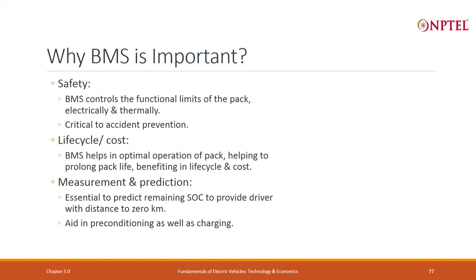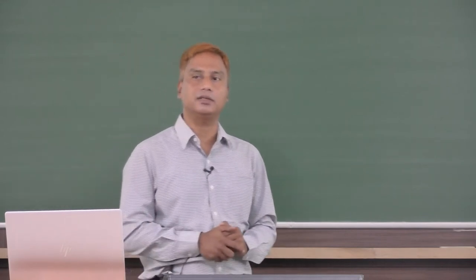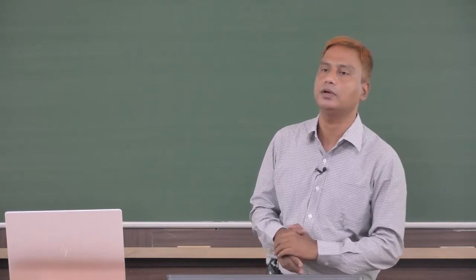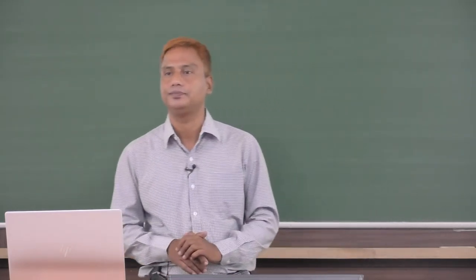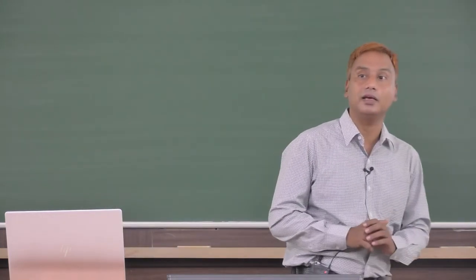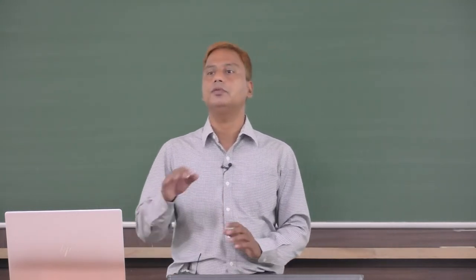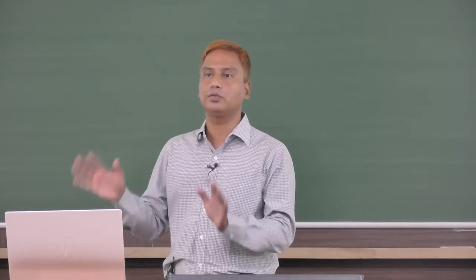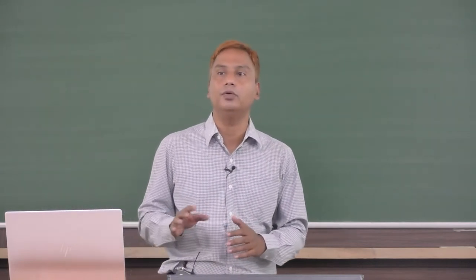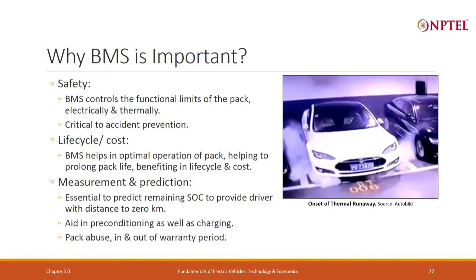Preconditioning: if you have an active thermal management system and your ambient temperature is 45 or 48 degrees, but the battery works well around 25 degrees centigrade, BMS starts the thermal management system to maintain the temperature at 25 degrees before you enter the car. It can also allow the vehicle thermal management system to pre-cool the cabin, so that when you come inside you feel comfortable and time is not wasted cooling the cabin first.